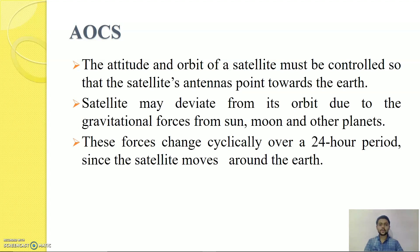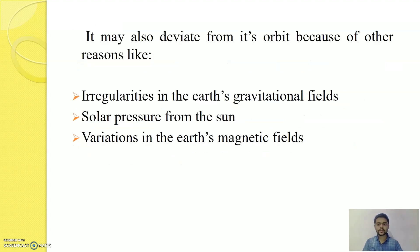If it deviates from its predefined orbit, then communication will be lost and this deviation can be caused by gravitational forces from Sun, Moon and other planets. As satellite moves around the Earth, these forces change cyclically over 24 hour period. Satellite may also deviate from its orbit because of other reasons, as stated here.